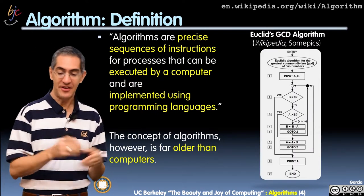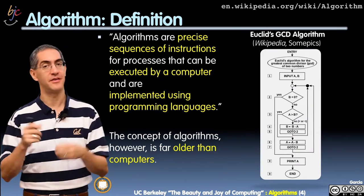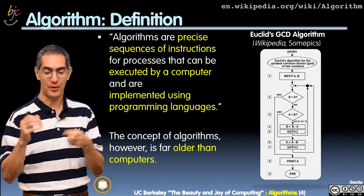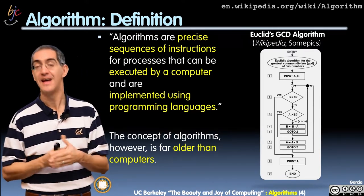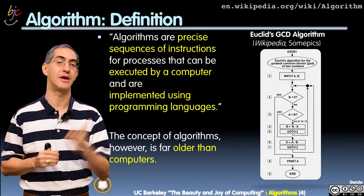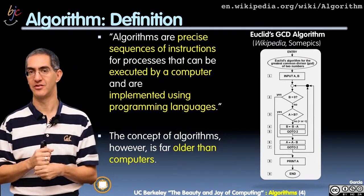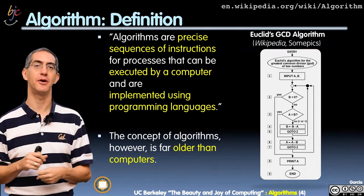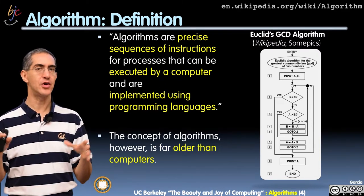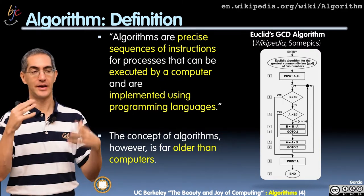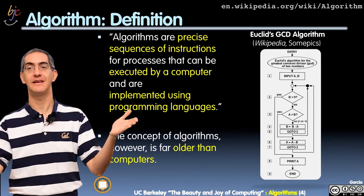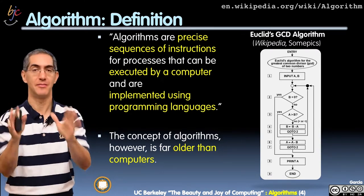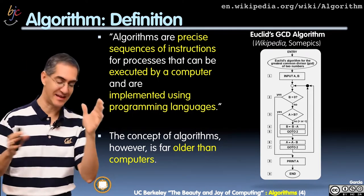We start with the definition. The definition comes from the curriculum framework, which says algorithms are precise sequences of instructions for processes that can be executed on a computer and are implemented using programming languages. You've probably seen algorithms before. The key is that you can express them using many different techniques, and at the end of the day, you put them into a programming language to actually implement them.